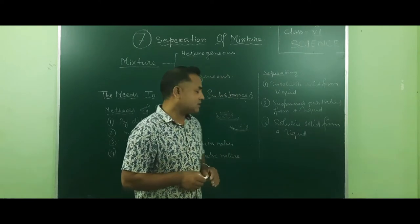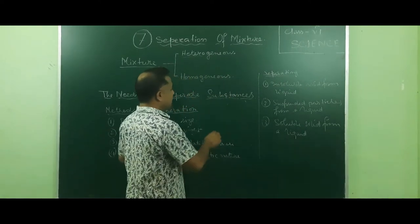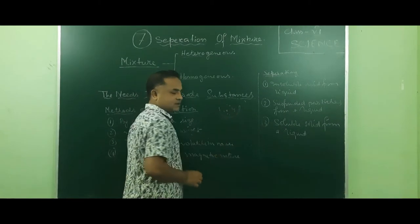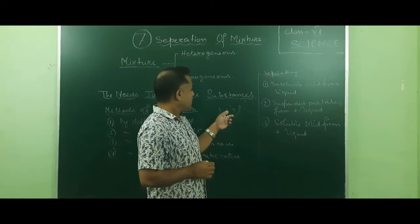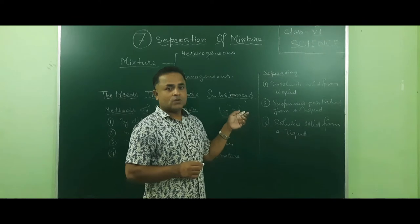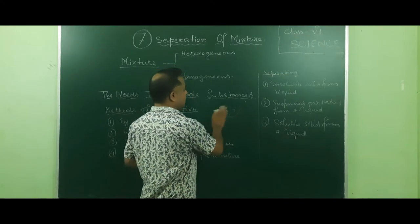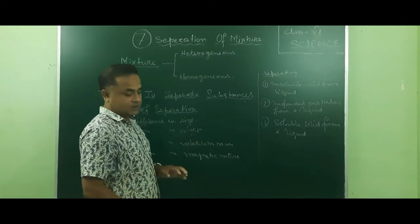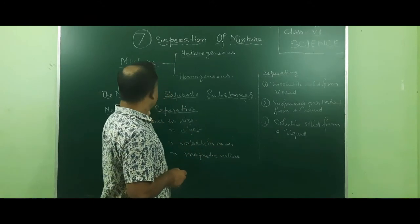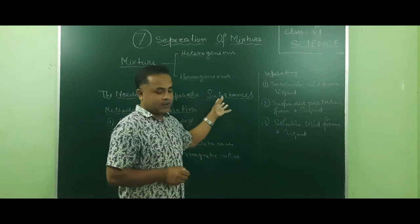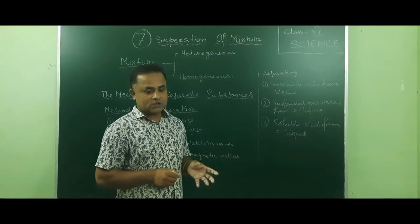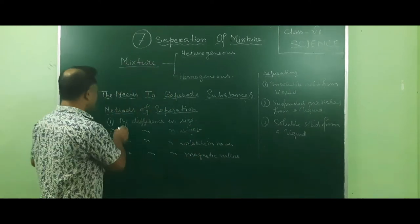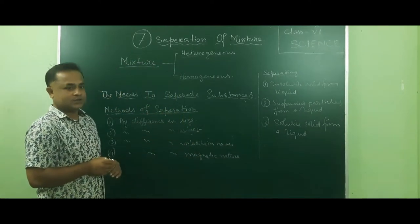Next is to get pure substances. In materials and mixture materials, we need to get pure substances. Whatever we do in an experiment, we mostly use pure substances. Now the three reasons we need methods of separation are: to get useful substances, to remove the unwanted substances, and to get pure substances.